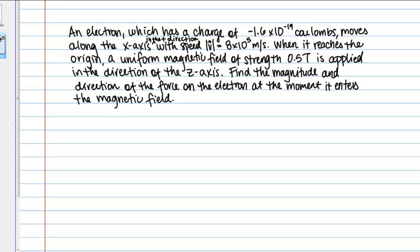An electron, which has a charge of negative 1.6 times 10 to the negative 19 coulombs, moves along the X axis in the positive direction with speed of 8 times 10 to the fifth meters per second. When it reaches the origin, a uniform magnetic field of strength 0.5 tesla is applied in the direction of the Z axis.